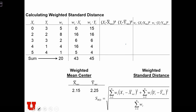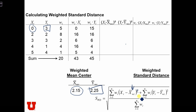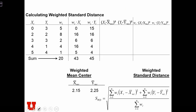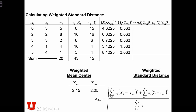That gives us 2.15 and 2.25. Next, we need to plug these values into the equation. We calculate the difference between each x and the weighted mean x, and each y and the weighted mean y, and then square those differences. Here are the squared differences in these columns.